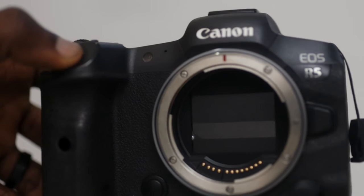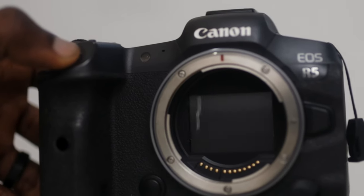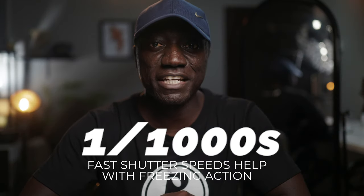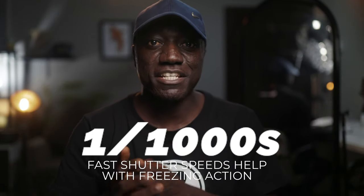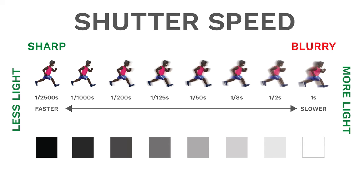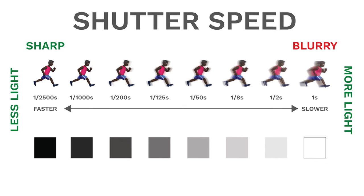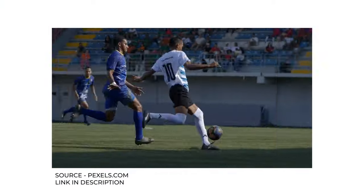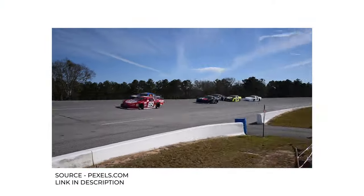Now there are fast shutters and then there are slow shutters. A fast shutter speed such as 1/1000 of a second freezes action. It's perfect for capturing fast moving subjects without any motion blur, meaning your images will be sharp and crisp. People who shoot a lot of fast action like football and race cars tend to use really fast shutter speeds.